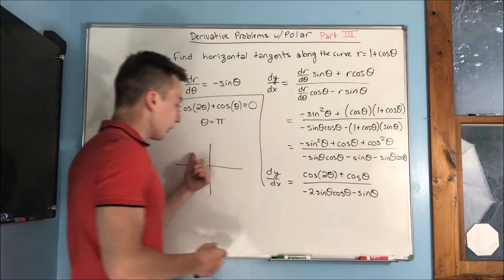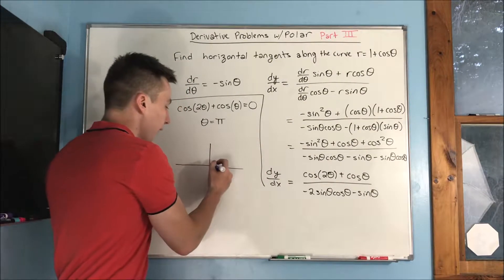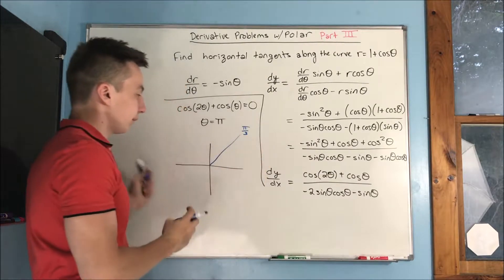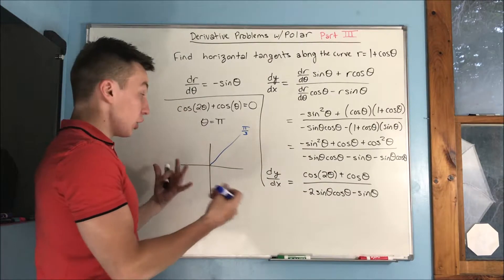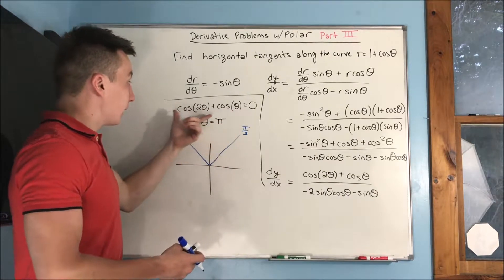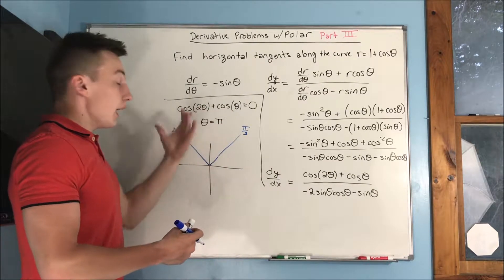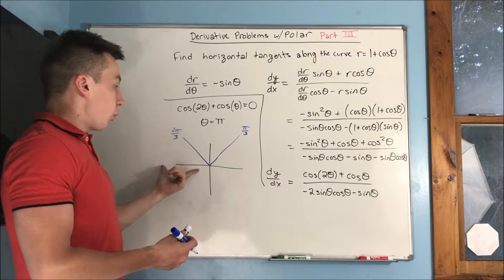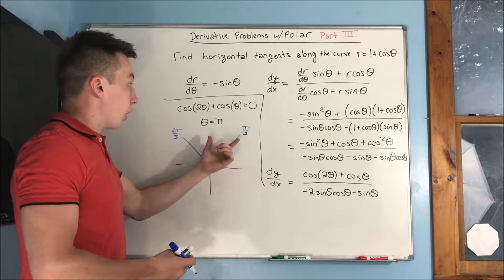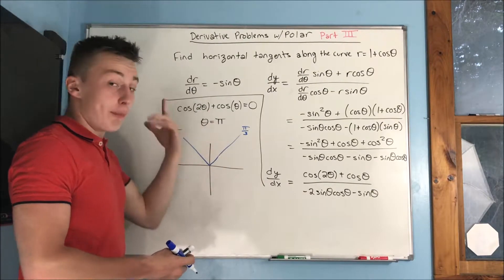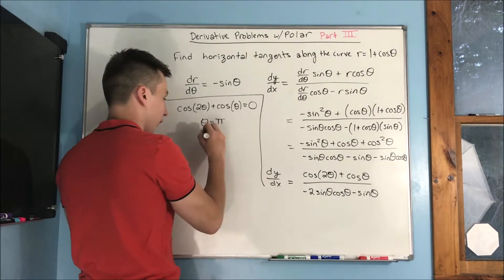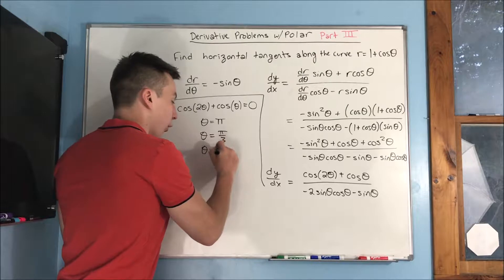Cosine is negative in the second quadrant. If you take the angle pi over three and double it you get two pi over three, and cosine of pi over three is one half, but cosine of two pi over three is negative one half — same as negative cosine of pi over three. That still satisfies the equation. For the same reason, five pi over three also works.